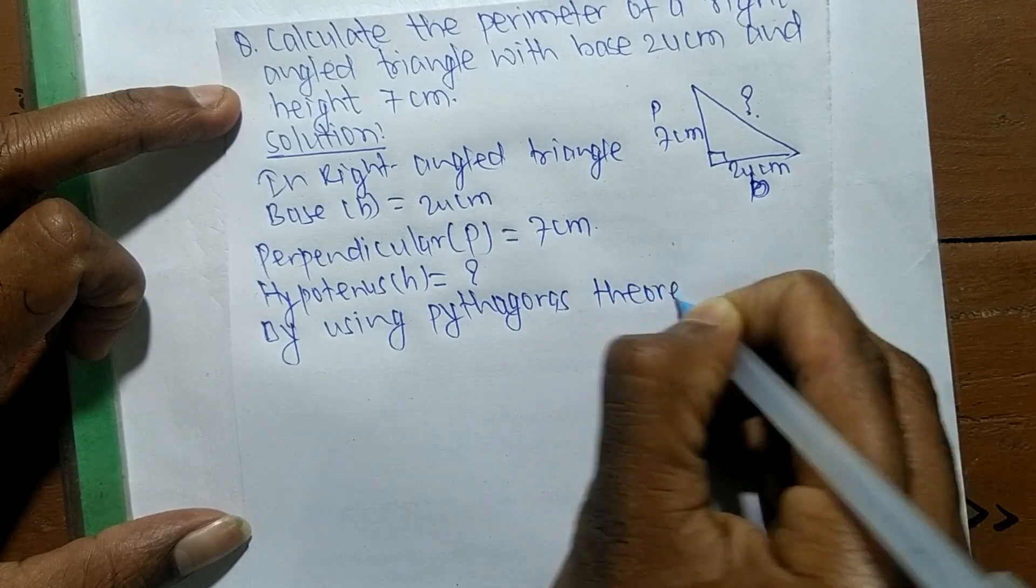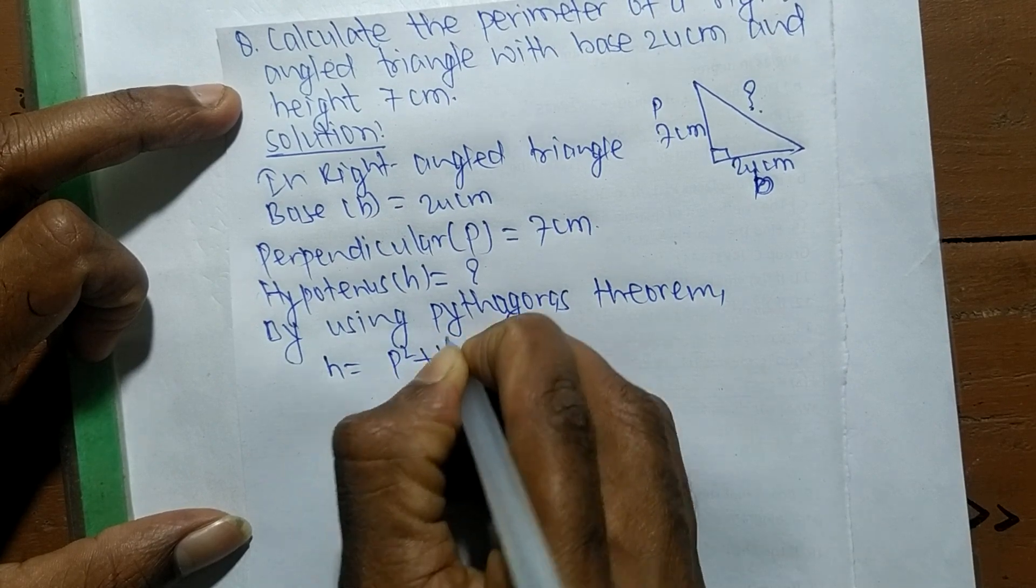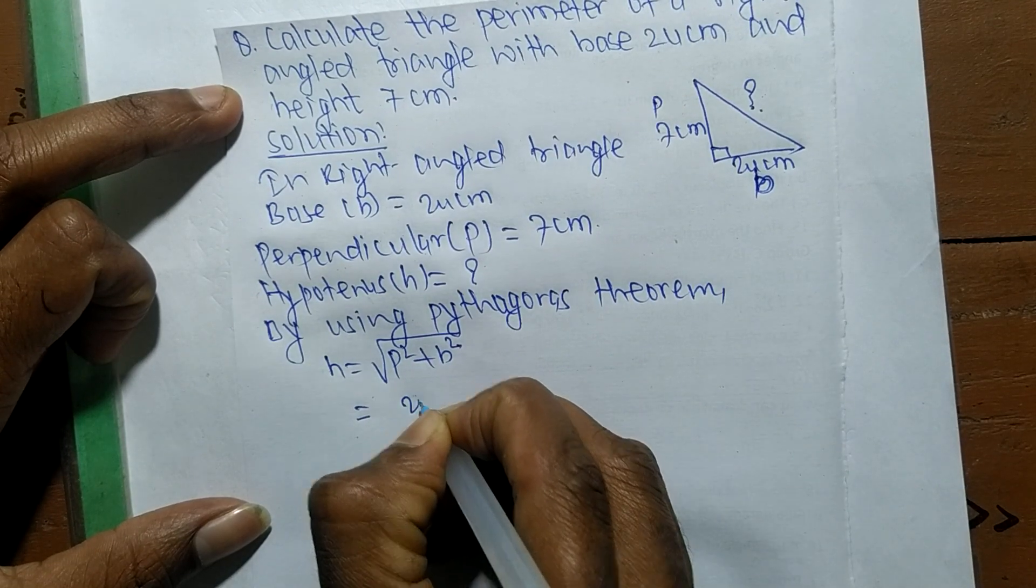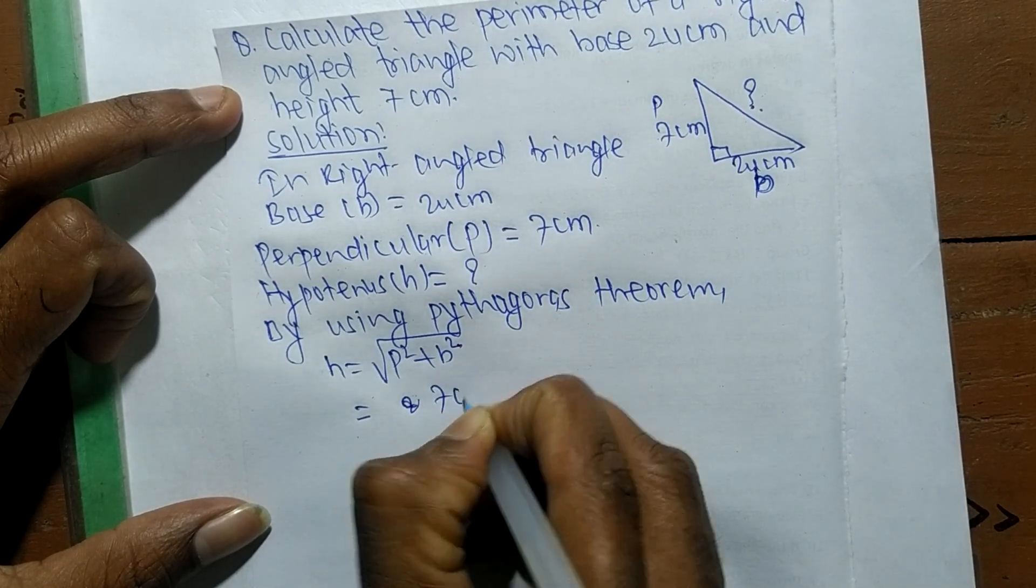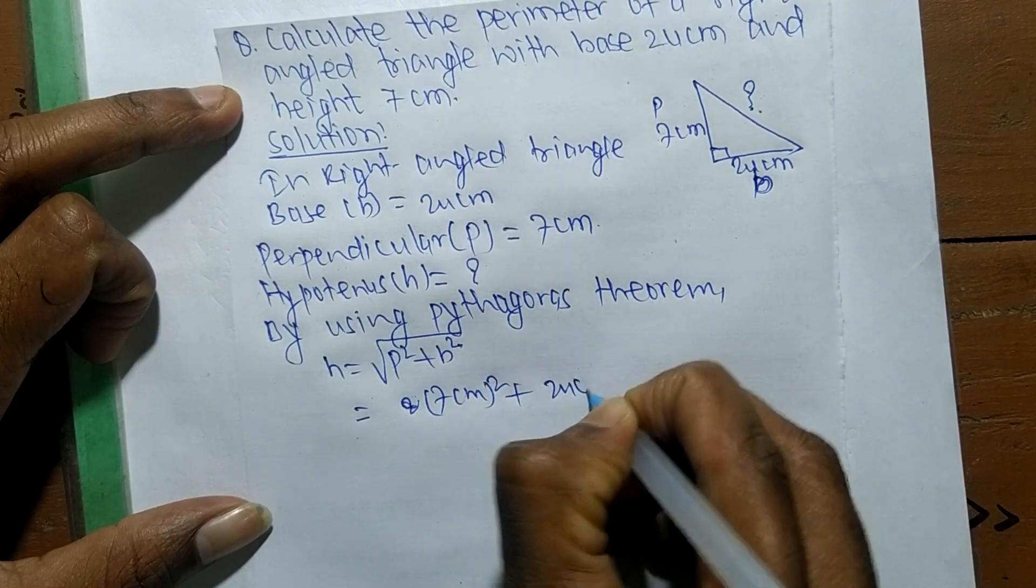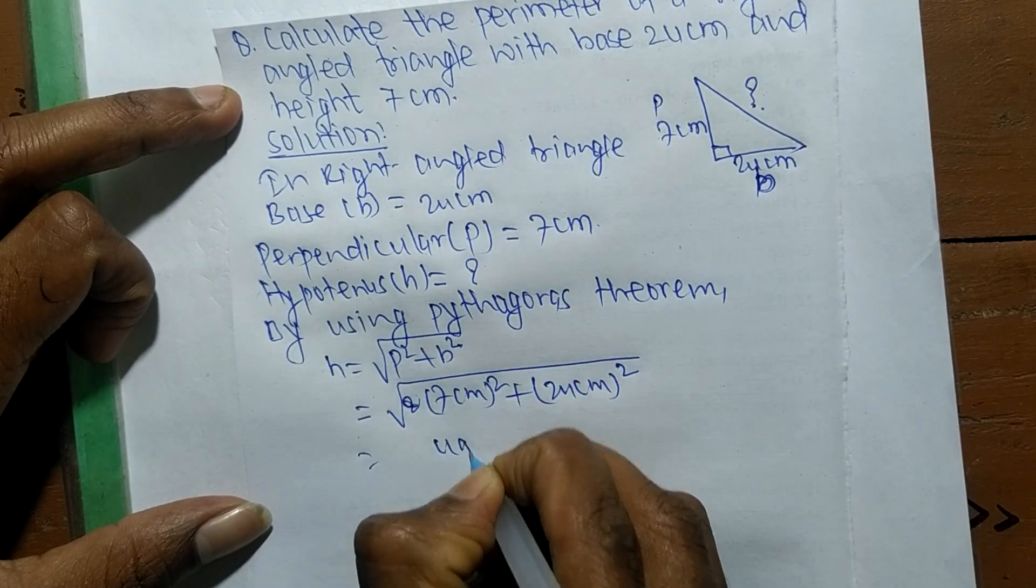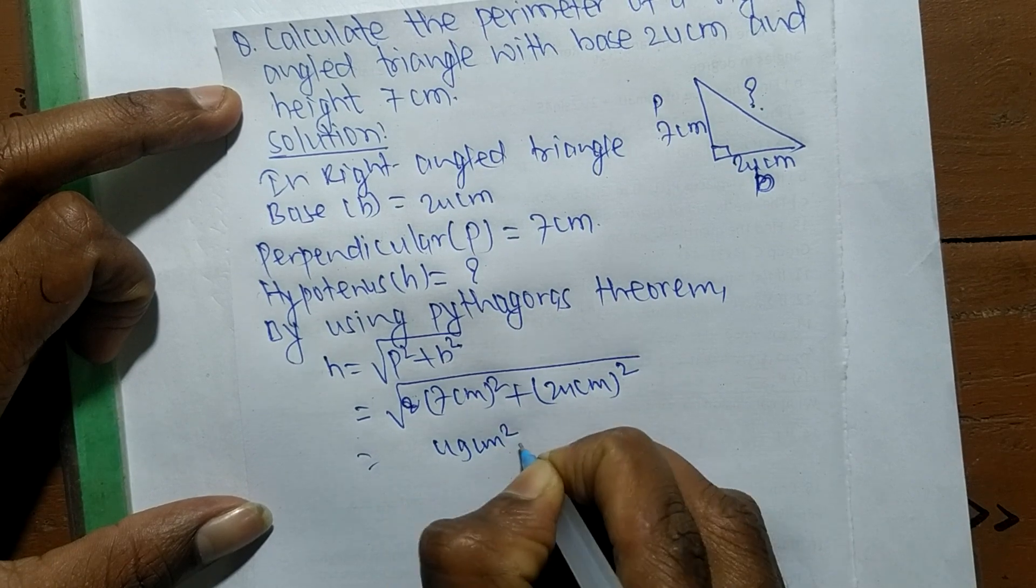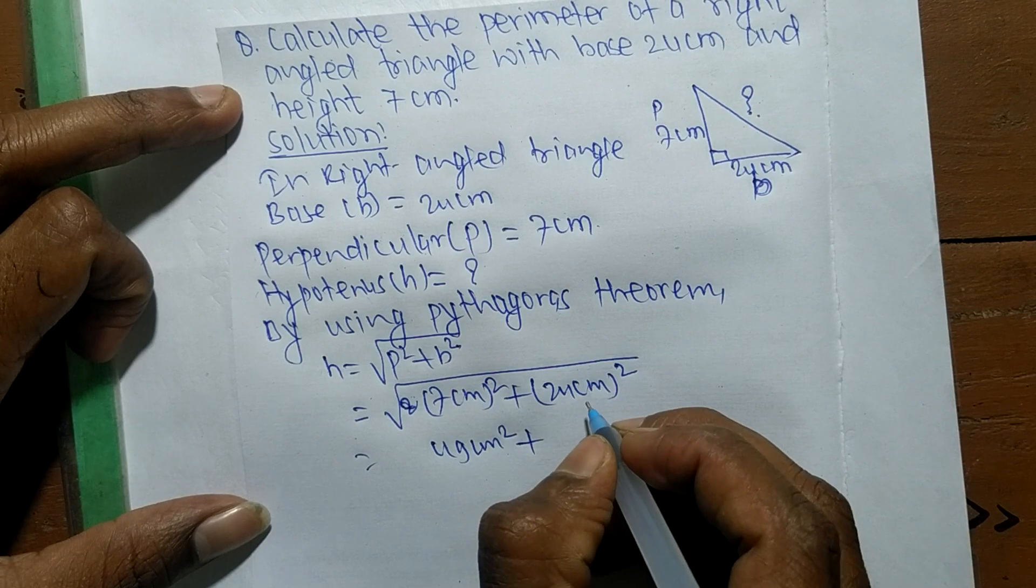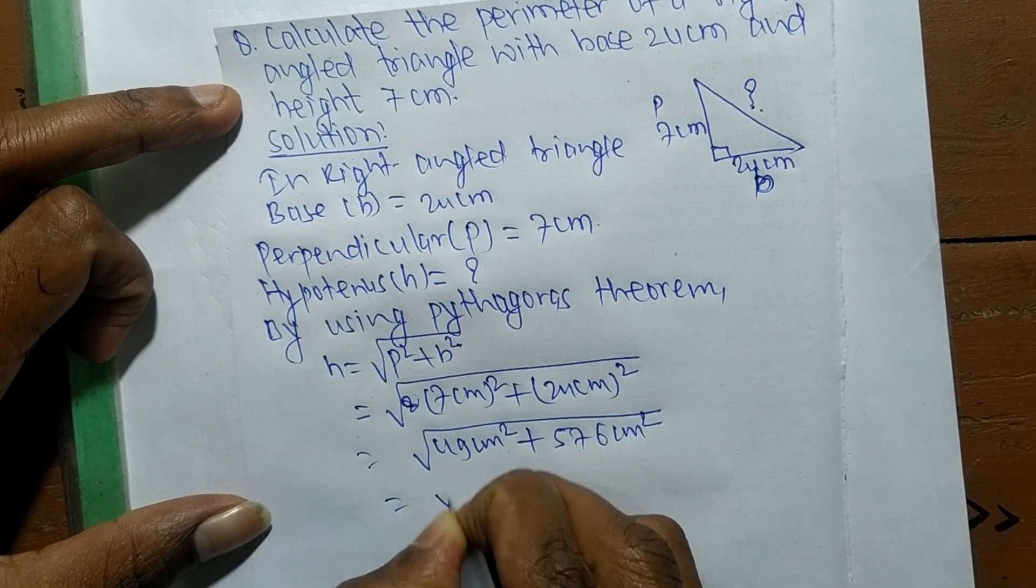By using Pythagoras theorem, H equals the square root of P squared plus B squared. The value of P is 7 centimeters, so 7 centimeters squared. The value of B is 24 centimeters, so 24 centimeters squared.